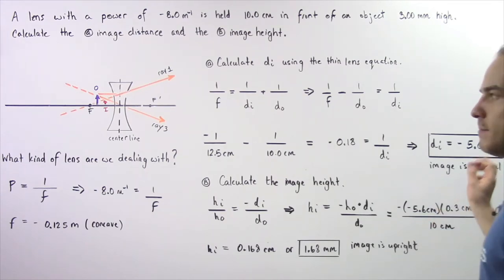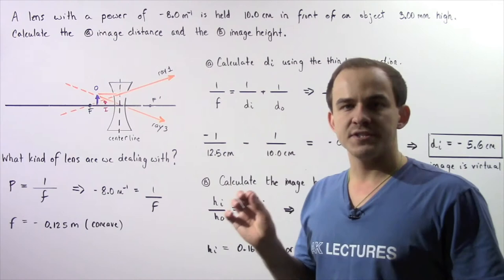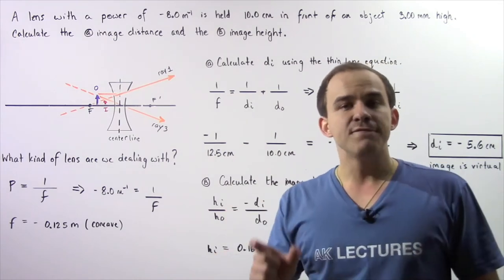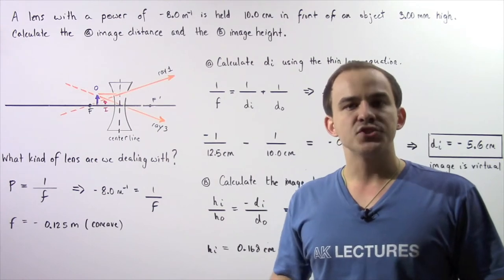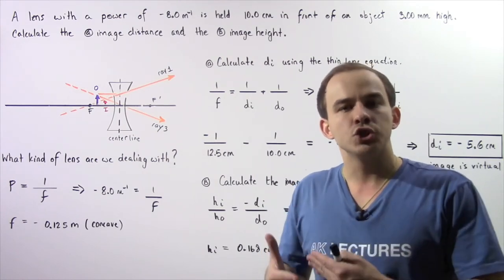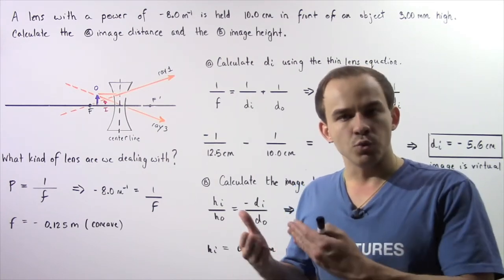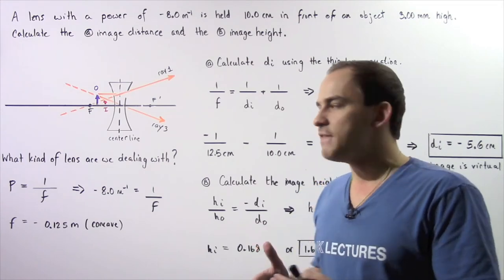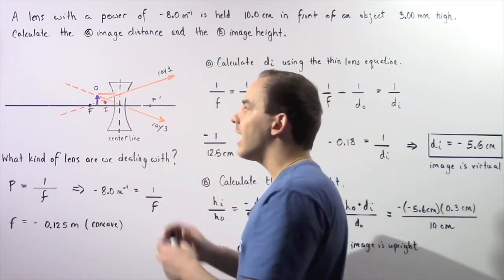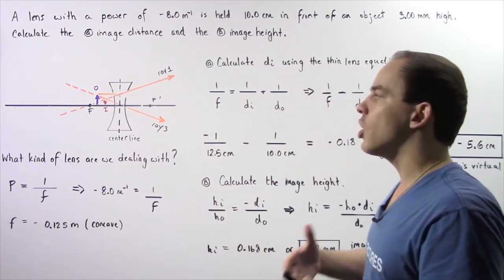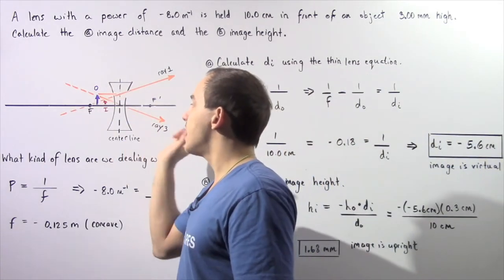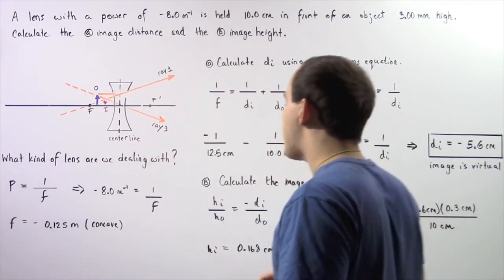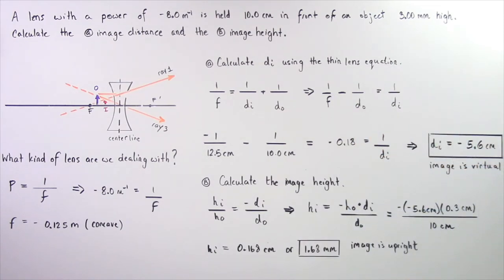What is the meaning behind the negative sign? Recall that if our image distance is negative, we are dealing with a virtual image. This virtual image is found on the same side as where the light actually originates — so the image is found on the same side as the object, to the left of our concave lens. The image is virtual.